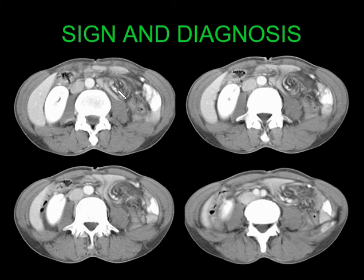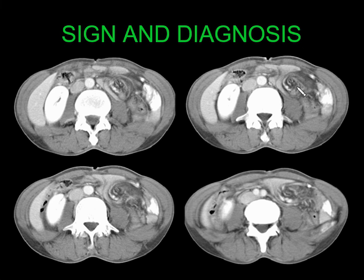Coming to the next case, you can see the classical whirlpool sign with twisting of the mesentery and vasculature along with small bowel dilatation. This is a classical case of midgut volvulus with the whirlpool sign due to twisting of mesentery or vessels, and it can be associated with malrotation.